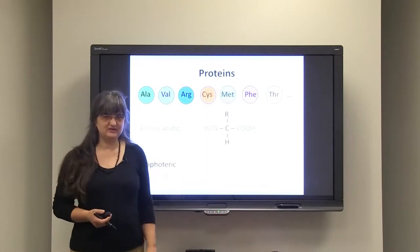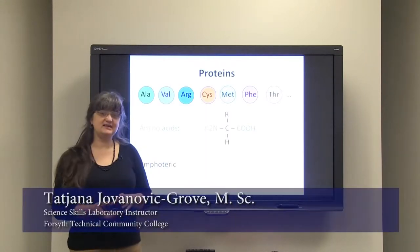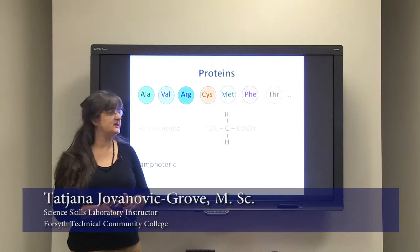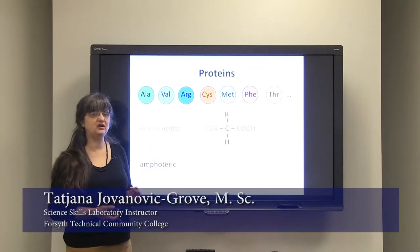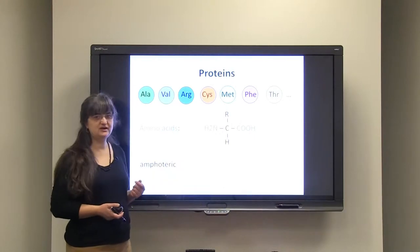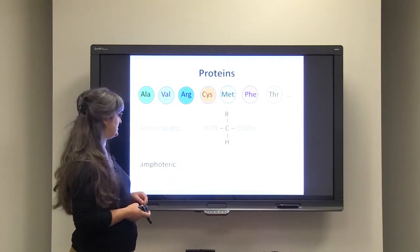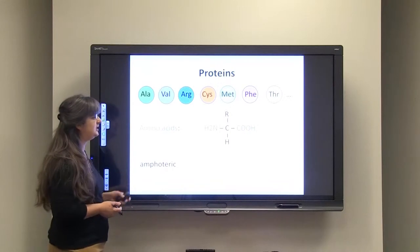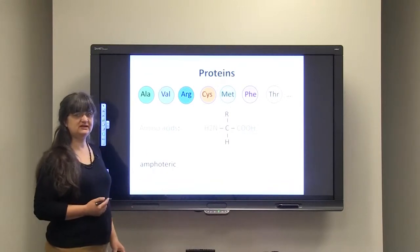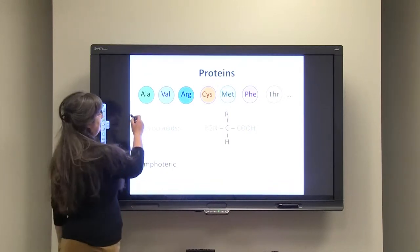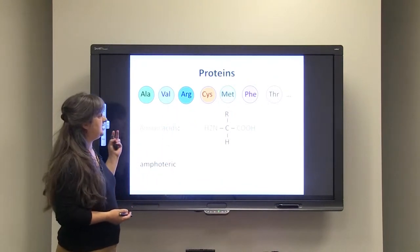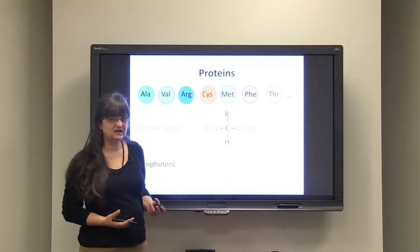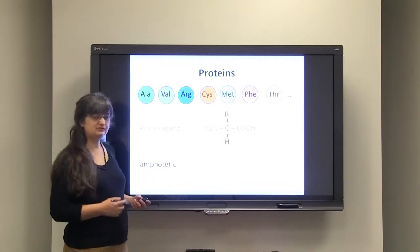Hello, today we are going to talk about proteins. As macromolecules, proteins have a structure of monomers that are called amino acids, very important large biological molecules. Now you can see here some of the names of the amino acids like alanine, valine, arginine, cysteine, and so forth.